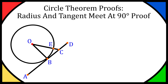This is the last theorem I'm going to be proving for the circle theorems playlist, and this one is a lot more wordy than the others, so bear with me — it's a bit different. It's not as straightforward as doing a purely maths one. So this is the circle theorem proof for radius and tangent meet at 90 degrees.